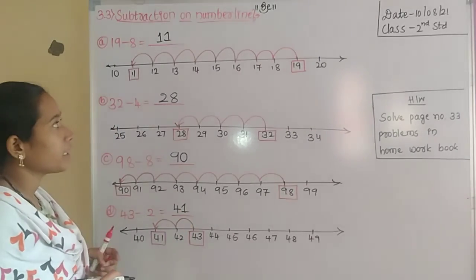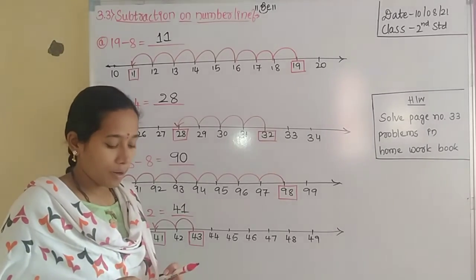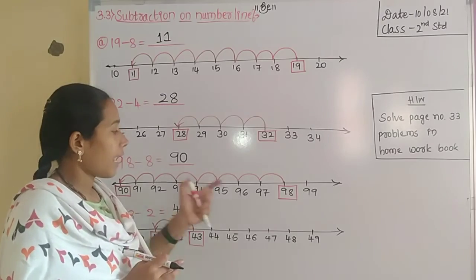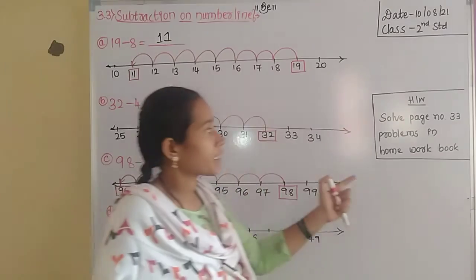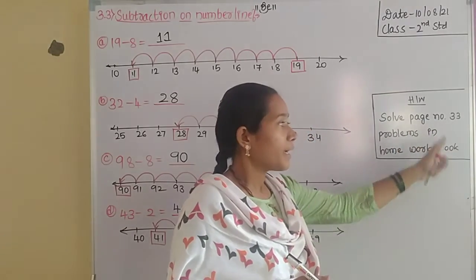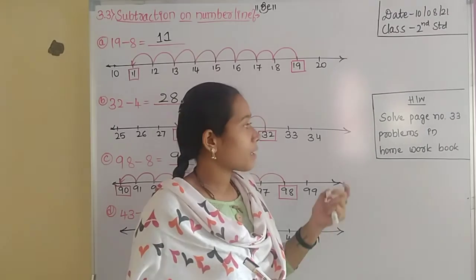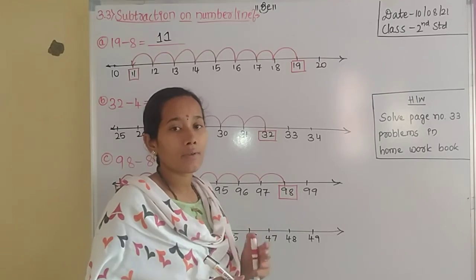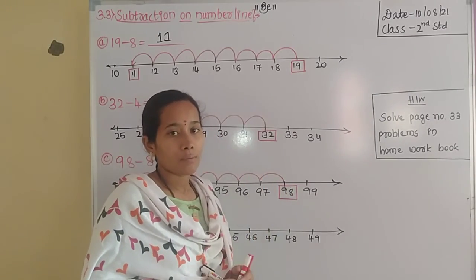This is the method to find the difference using subtraction on the number line. Write this in your classwork book. Your homework is to solve the page number 33 problems in your homework book — they also include word sum exercises on subtraction on the number line. Solve those in your homework book. Thank you.